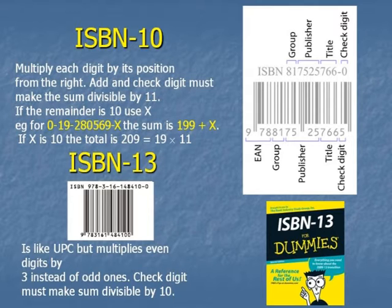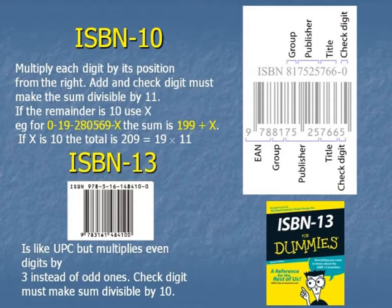It's going to be barcode read. You've got a first number here — 9 — which tells you something about the region, the publishing group, the publisher, the title of the book. And then the last digit at the end is the check digit.